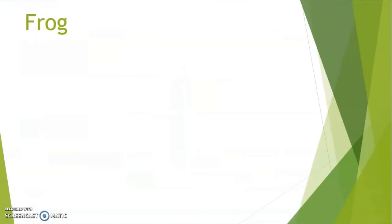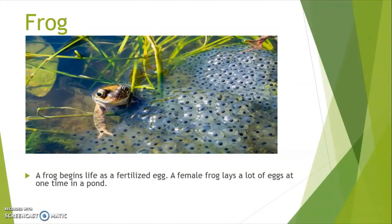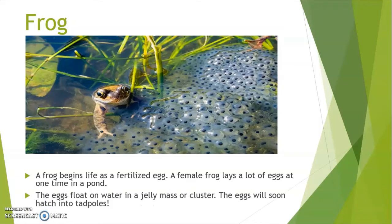Frogs: a frog begins life as a fertilized egg. A female frog lays a lot of eggs at one time in a pond. The eggs float on water in a jelly mass or cluster. The eggs will soon hatch into tadpoles.